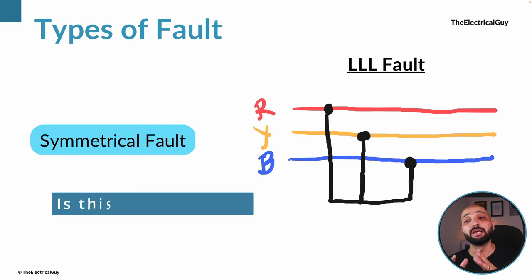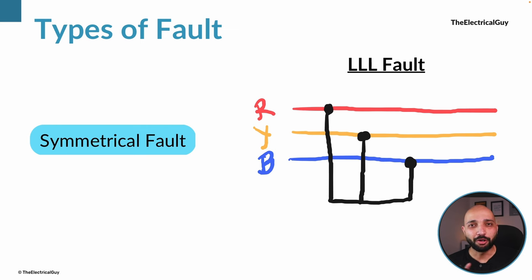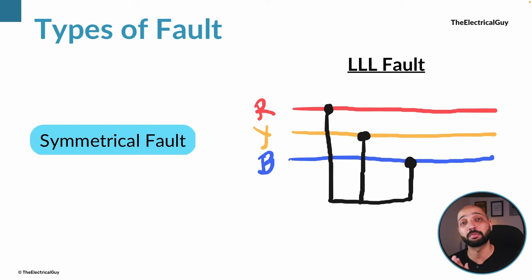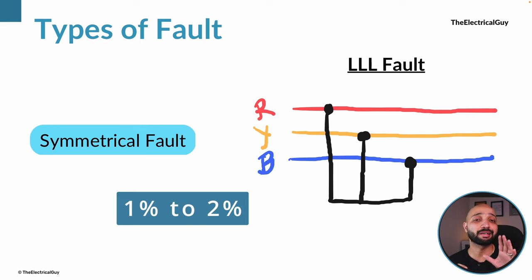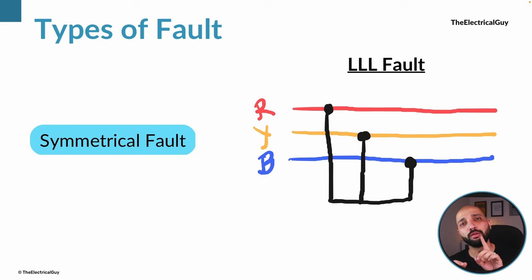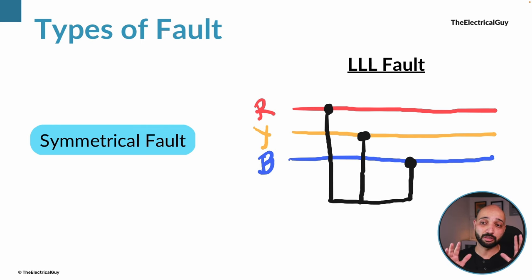You may ask: if in a symmetrical fault the system is still balanced, does that mean it's a good fault? No — no fault is good. The triple line fault is actually the most severe fault a power system can witness, and the rating of circuit breakers is decided based on this fault in most cases. However, the occurrence of this fault is very rare — only one to two percent of faults are symmetrical in nature.